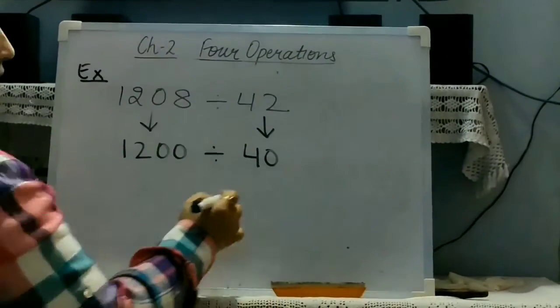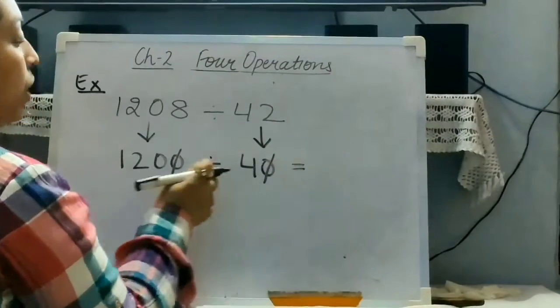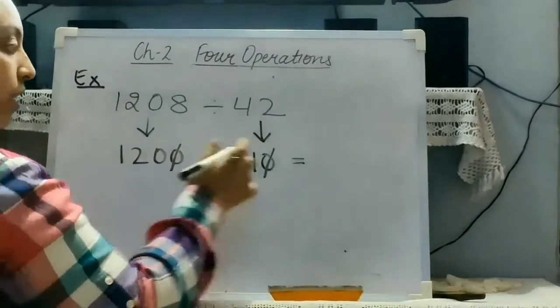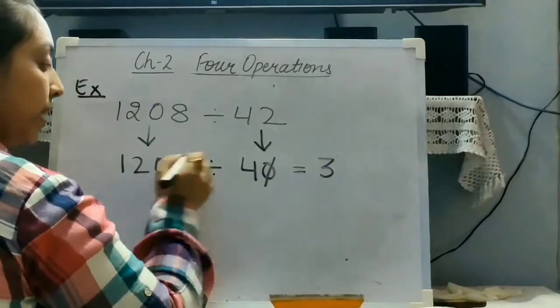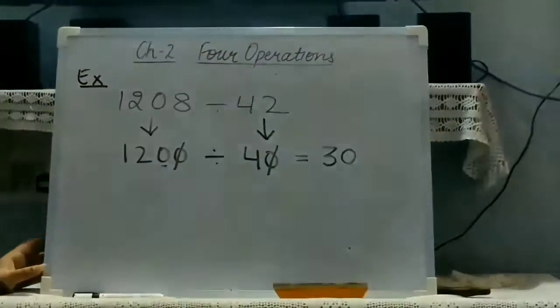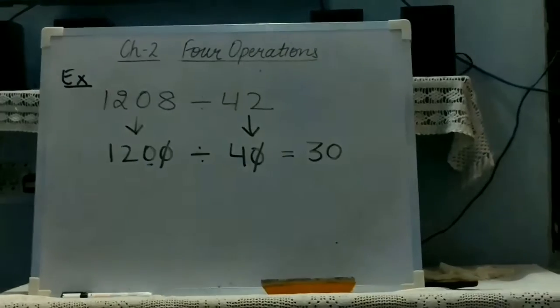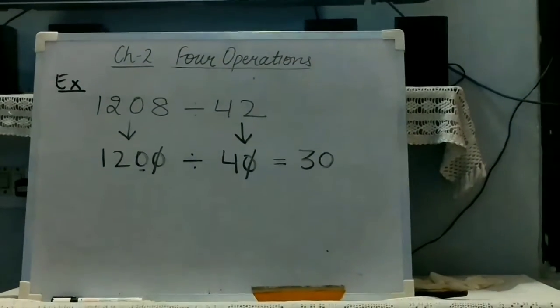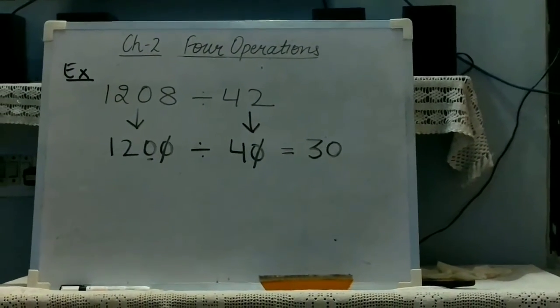Now, we will divide. The zero will be cancelled with zero, now 4 threes are 12 and 1 zero will be left, so 0. So, the quotient, estimated quotient for this question is 30.